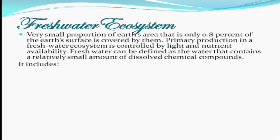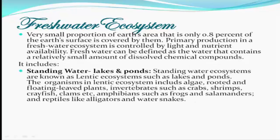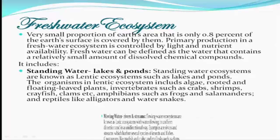Freshwater can be defined as water that contains a relatively small amount of dissolved chemical compounds. It includes standing water lakes and ponds. Standing water ecosystems are known as lentic ecosystems, and the organisms in lentic ecosystems include algae, rooted and floating-leaf plants, and invertebrates such as crabs, crayfish, clams, frogs and salamanders, and reptiles like alligators and water snakes.